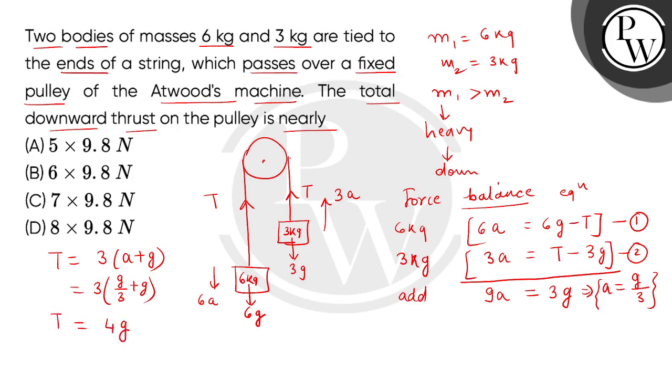Now we can see that the downward thrust on the pulley will be 2T. This is 2 multiplied by 4G, which equals 8 times G.